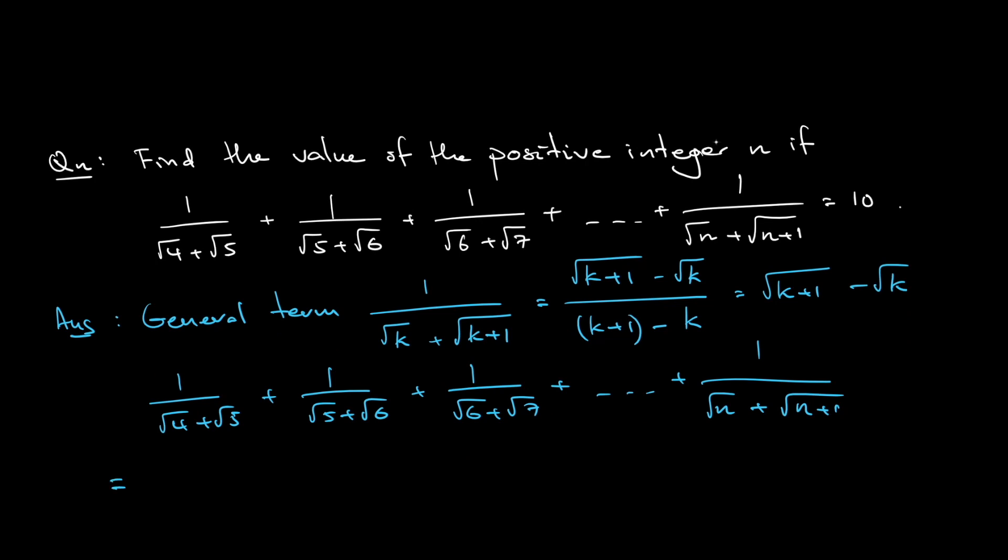The first fraction is when k equals 4: square root of 5 minus square root of 4. For the second fraction, k equals 5: square root of 6 minus square root of 5. Following the same pattern, square root of 7 minus square root of 6, all the way until square root of n plus 1 minus square root of n.